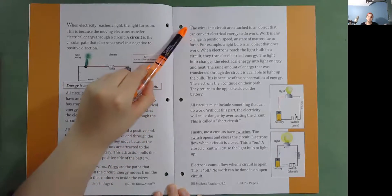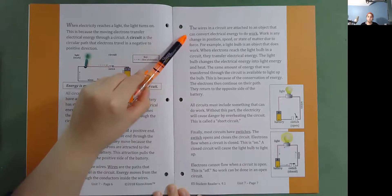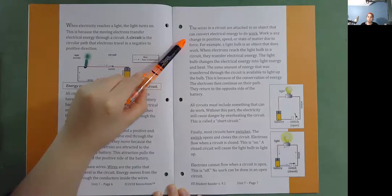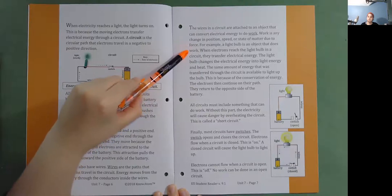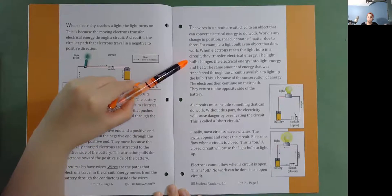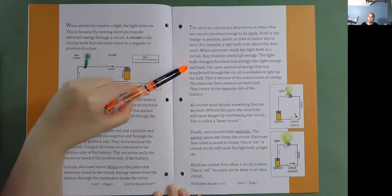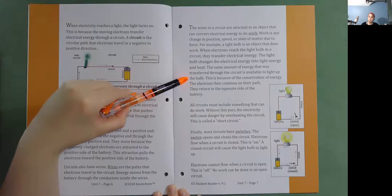The wires in a circuit are attached to an object that can convert electrical energy to do work. Work is any change in position, speed, or state of matter due to force. For example, a light bulb is an object that does work. When electrons reach the light bulb in a circuit, they transfer electrical energy. The light bulb changes the electrical energy into light energy and heat. The same amount of energy that was transferred through the circuit is available to light up the bulb. This is because of the conservation of energy.